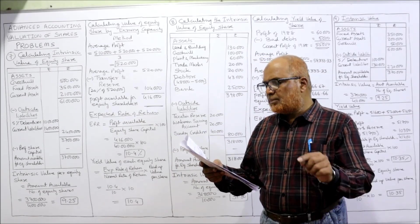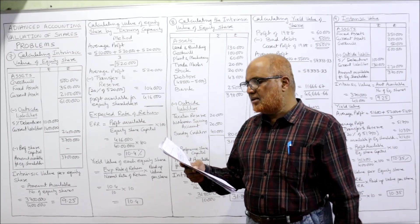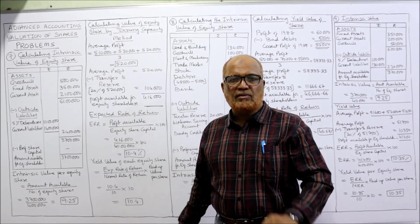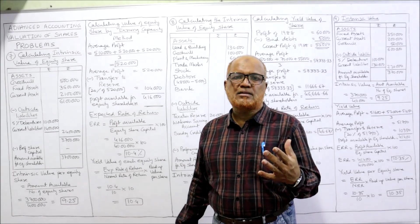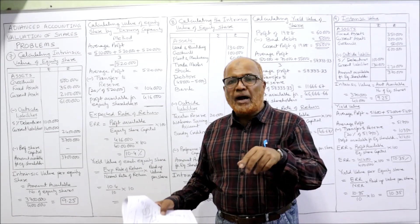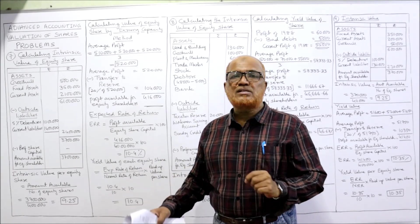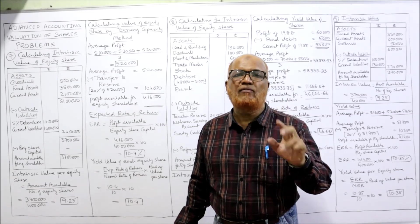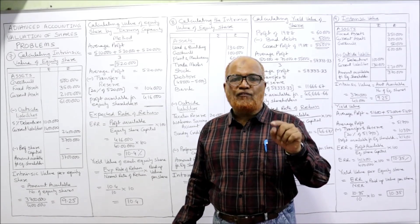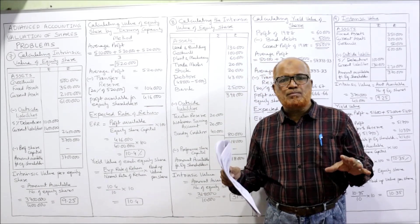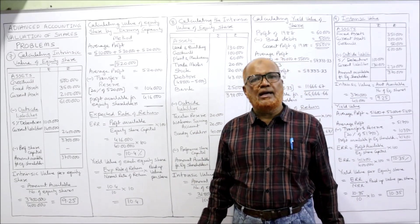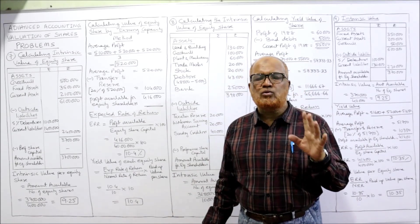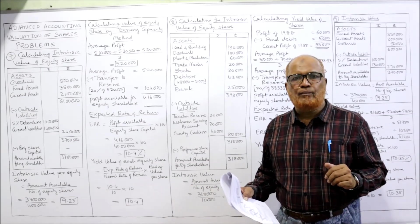Of which 20% was placed under reserve. In this problem, the balance sheet is given so we can calculate intrinsic value. Apart from that, profits are given, so we are required to find out the yield value. So first time I am going to explain you how to find out the yield value. So far, we have applied only one topic, that is intrinsic value.